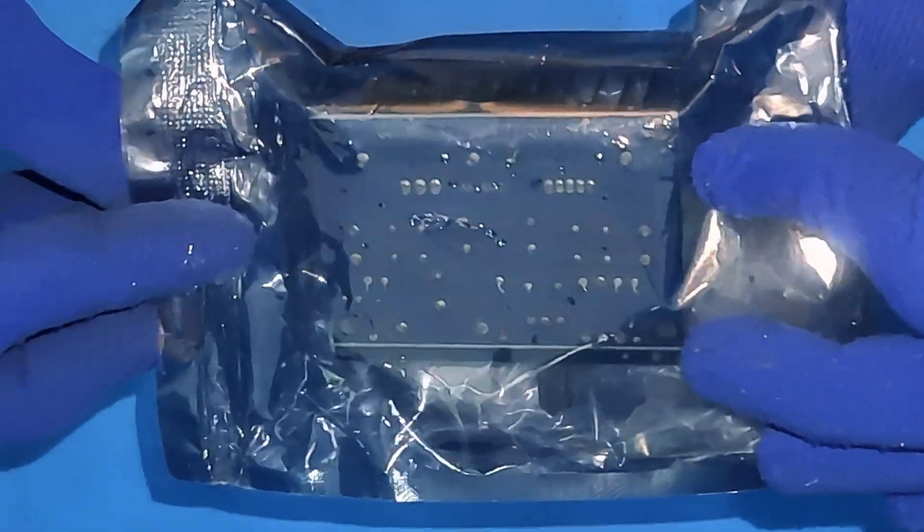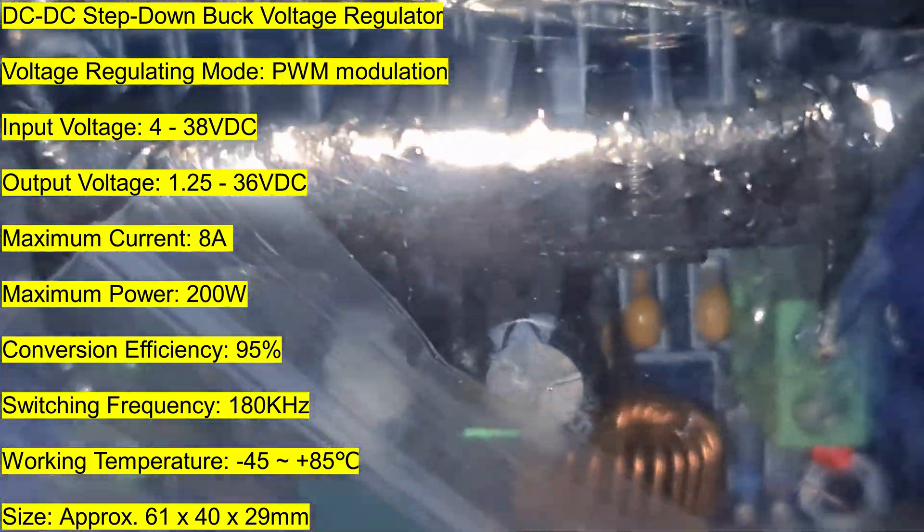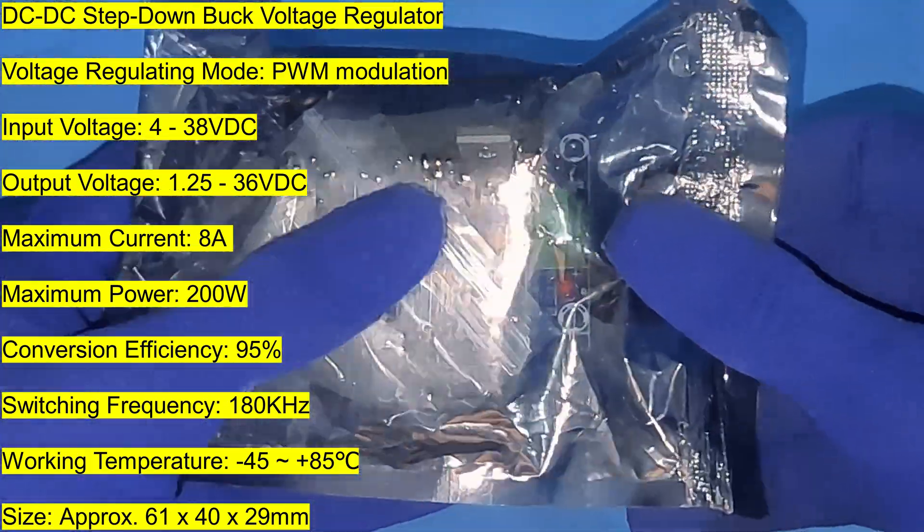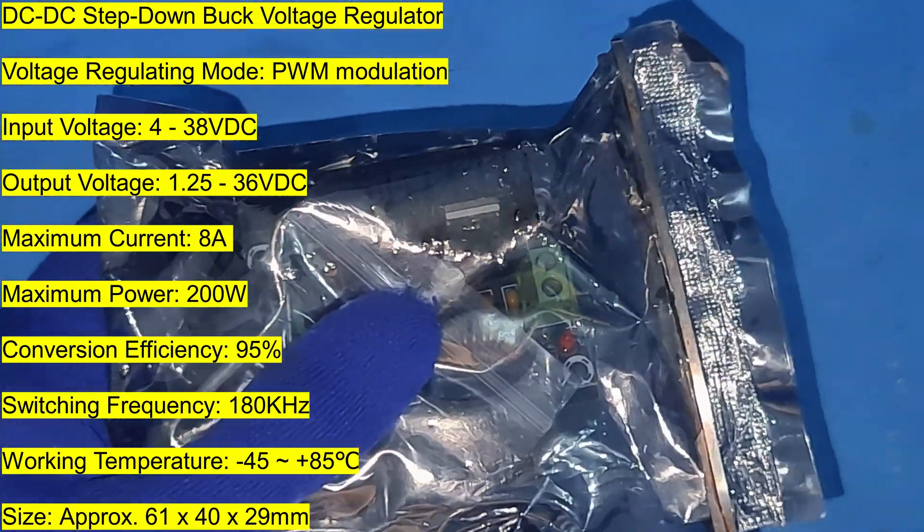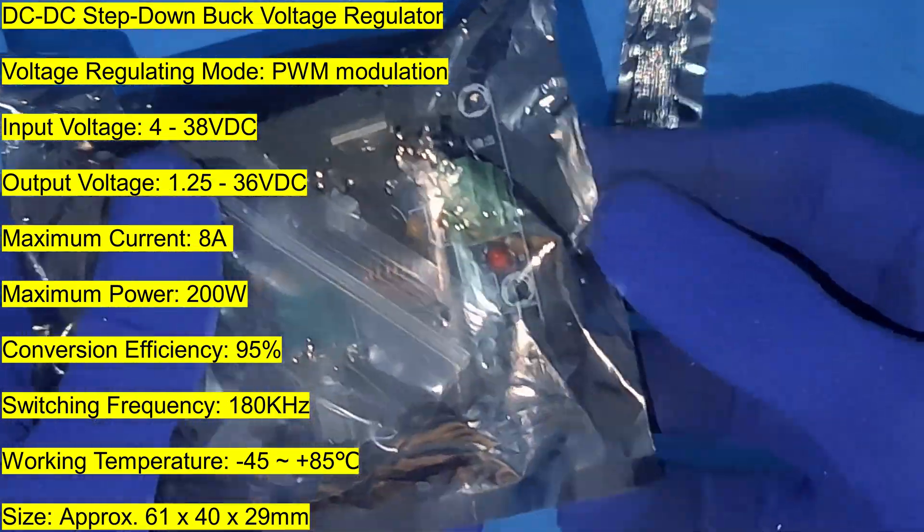This powerful little unit can step down a DC voltage from 4 to 38 volts to a precise 1.25 to 36 volts with a maximum current of 8 amps. Great for powering different devices.